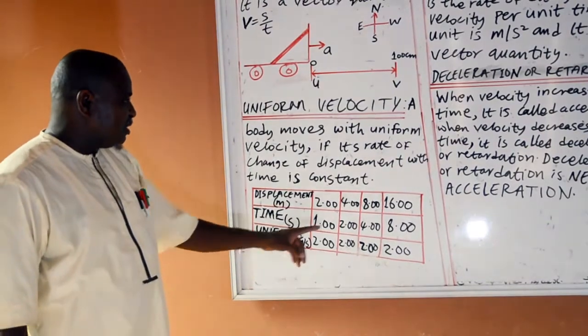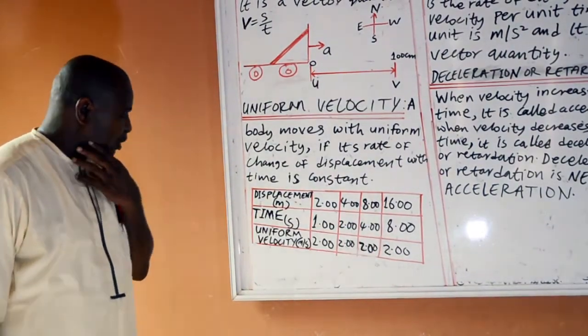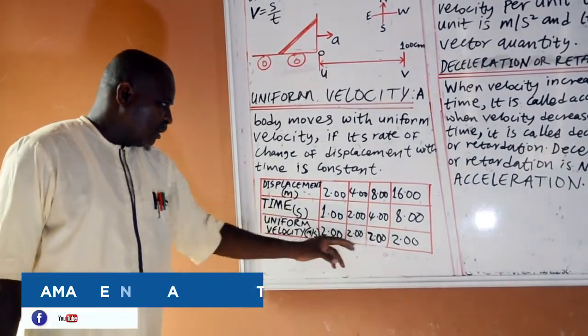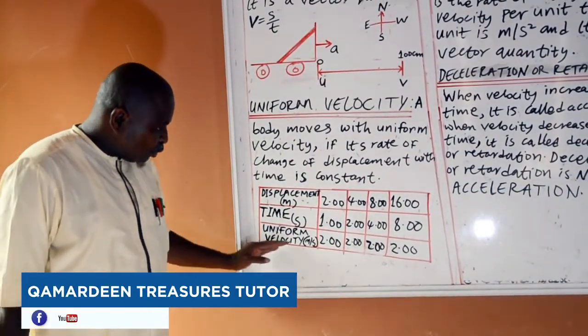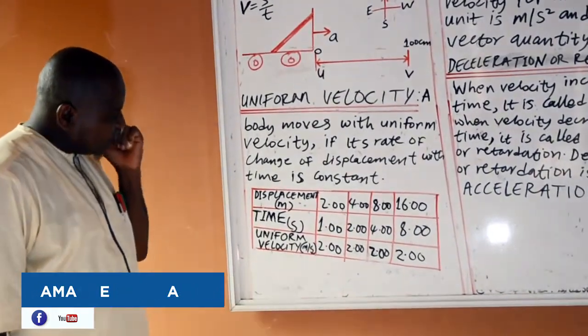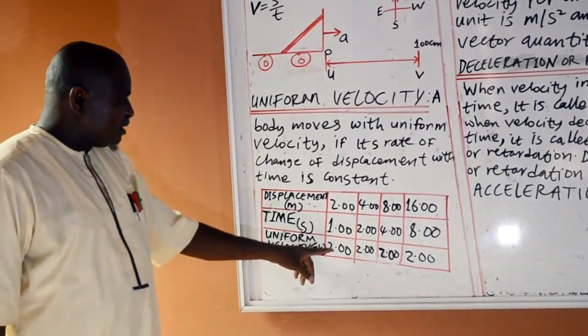The uniform velocity, 16 divided by 8 is 2. If you observe uniform velocity on the last column below, I mean the row below, this is first row, second row, third row, you find that the unit velocity is the same thing.